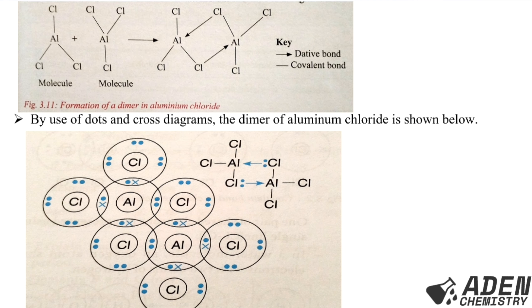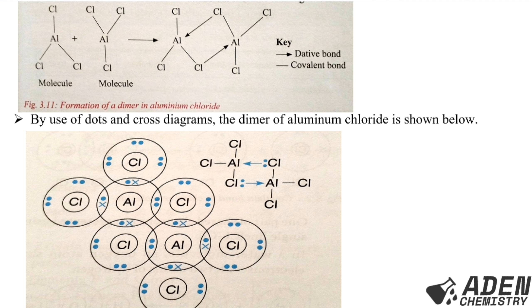Now let's see how dimer aluminium chloride looks. We have one aluminium chloride molecule and another aluminium chloride molecule. When they combine to form the dimer, we have two coordinate bonds. The other bonds are covalent bonds. When we have a bond between aluminium and chlorine within one molecule, the bond is covalent. But when chlorine of one molecule combines with aluminium of another molecule, we get a coordinate or dative bond.